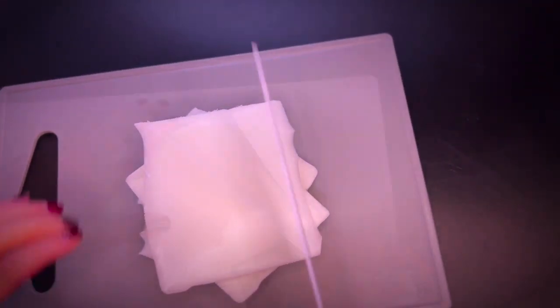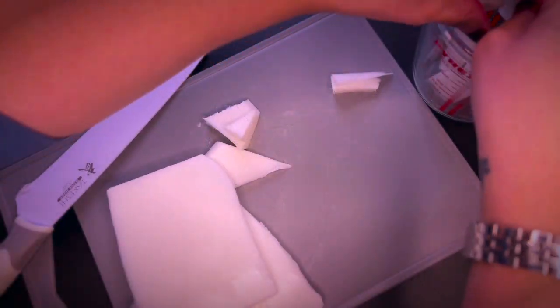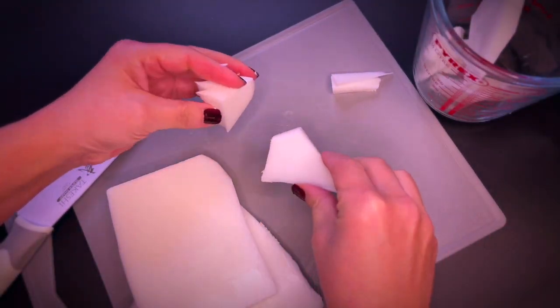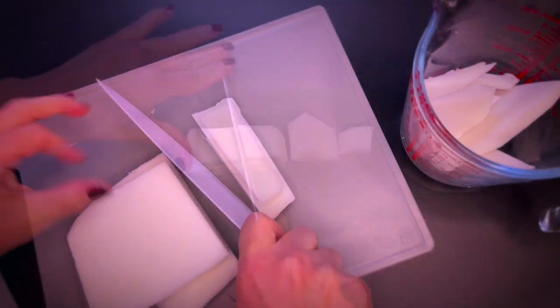First of all, we need to melt down a melt and pour soap base. I'm using an opaque one for this particular project because I'm going for pastel type pink shades.